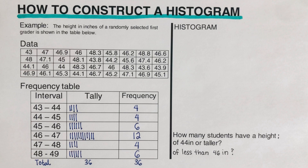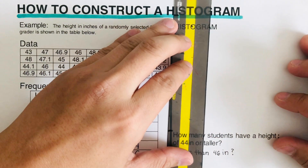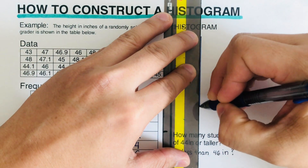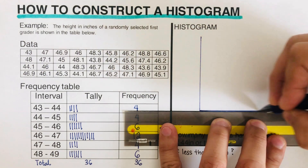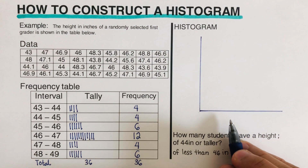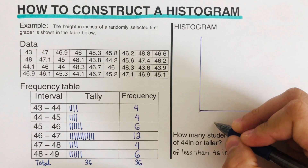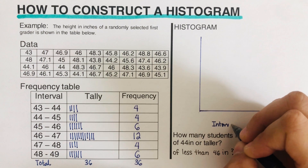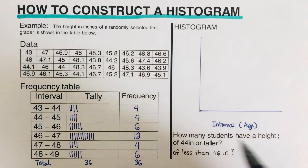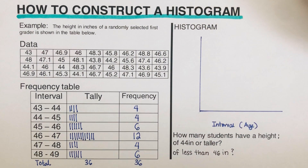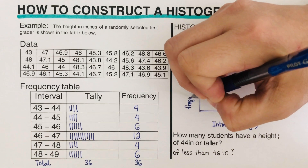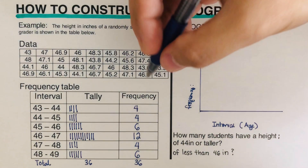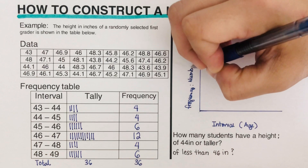A histogram is a diagram consisting of rectangles whose area is proportional to the frequency of a variable and whose width is equal to the class interval. Since all values are positive, we use the first quadrant. I'll draw the vertical and horizontal axes. The horizontal axis is labeled with the interval — in this case the height in inches — and the vertical axis is labeled with the frequency, which here represents the number of students.